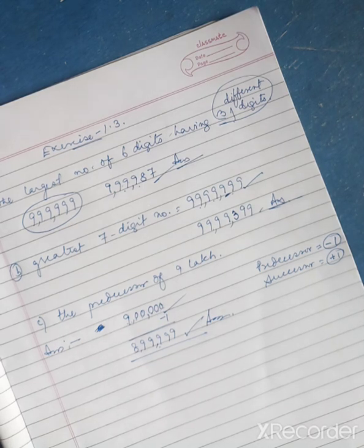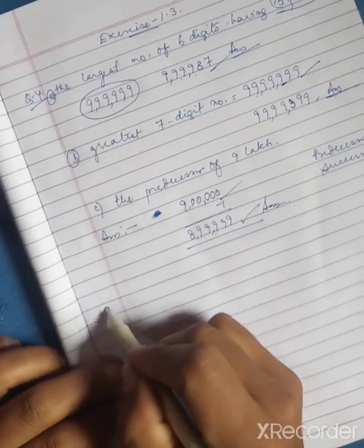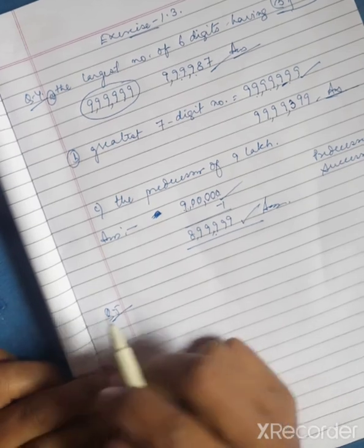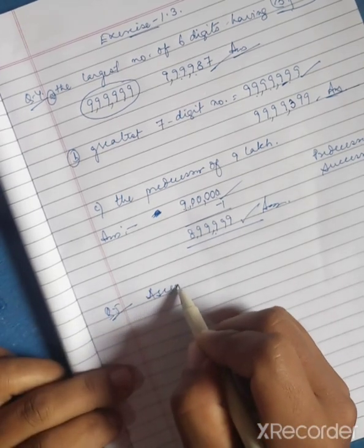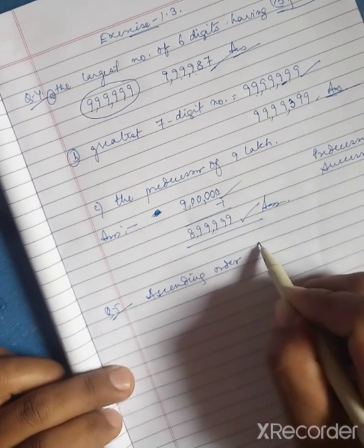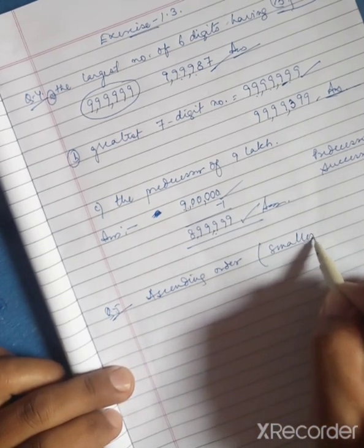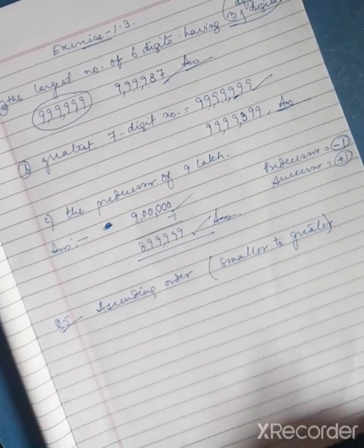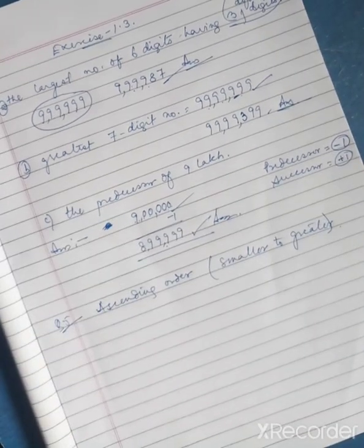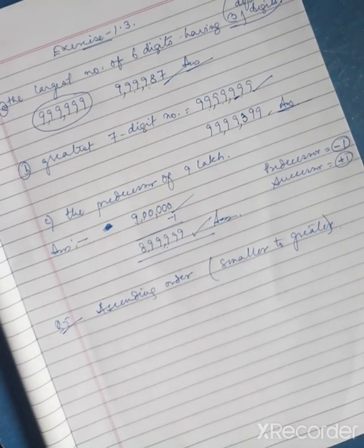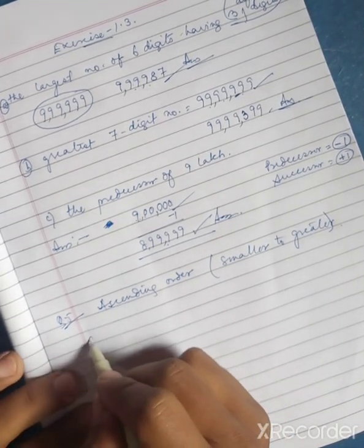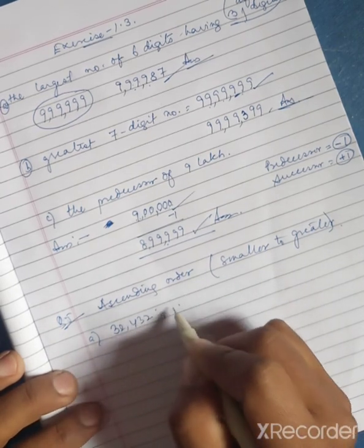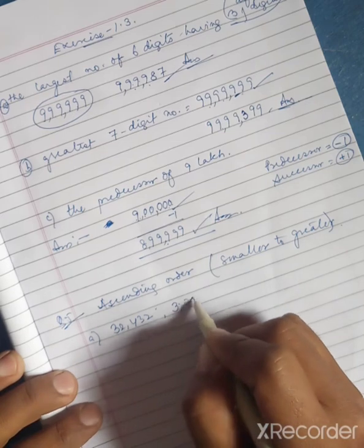Question number five: write in ascending order using symbols. Ascending order means arranging from smaller to greater. The numbers given need to be compared and arranged from the smallest to the largest.